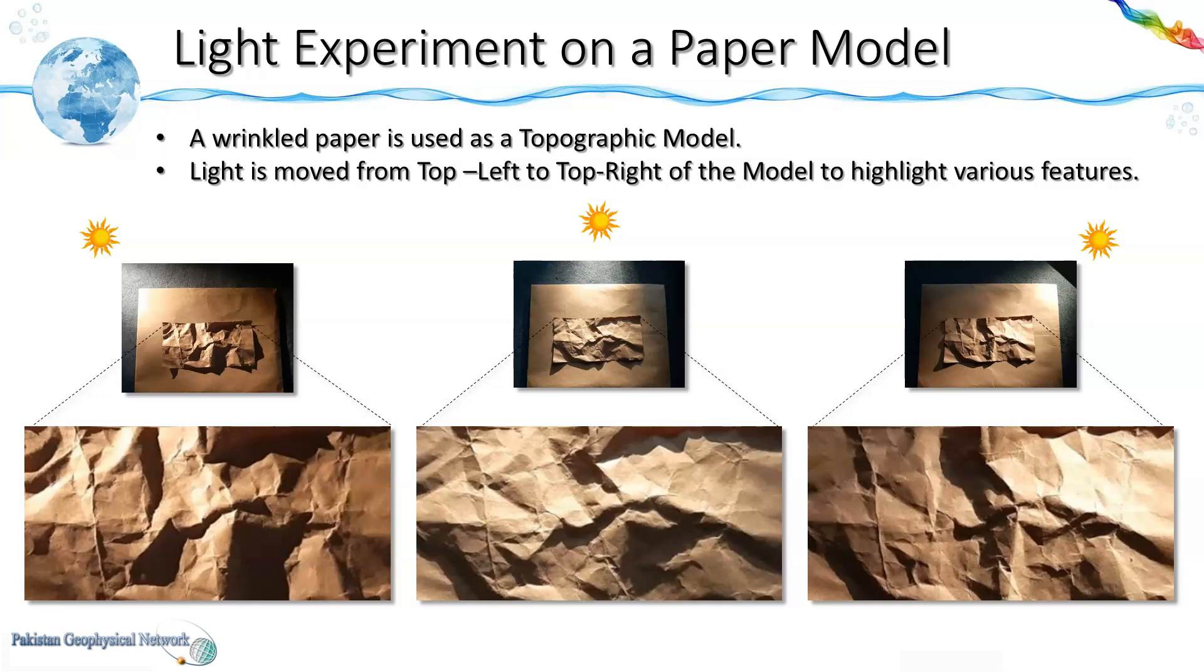I have created a topographic model using a wrinkled paper and projected light at different angles from the top. So if the light source is at the top left side these are the features that would be highlighted.